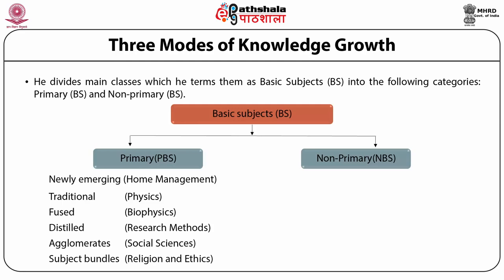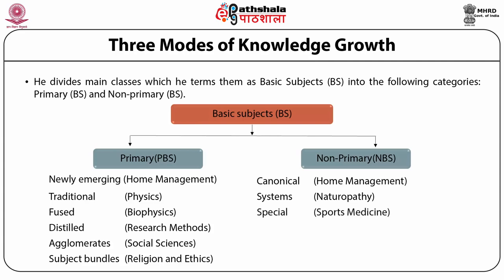Three modes of knowledge growth: Ranganathan divides main classes — which he terms basic subjects — into primary basic subjects and non-primary basic subjects. Among the primary basic subjects are newly emerging subjects, traditional subjects, fused subjects, distilled subjects, agglomerates and subject bundles. On the other hand, non-primary basic subjects are canonical classes — that is, subdivisions of a main class — such as systems like naturopathy in medicine, and specials like sports medicine, environment development, war economy or high altitude engineering.